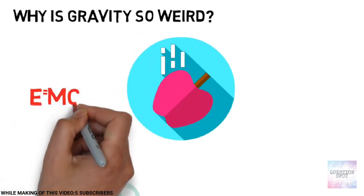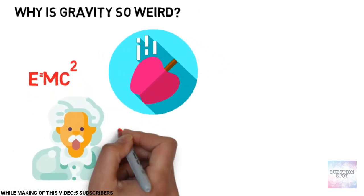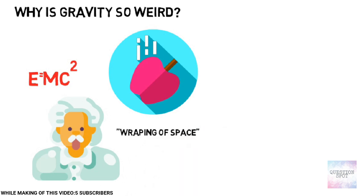And Einstein's theory of general relativity gives a mathematical formulation for gravity, describing it as a warping of space.